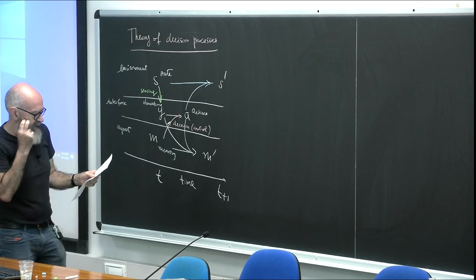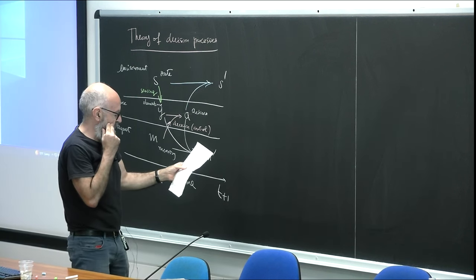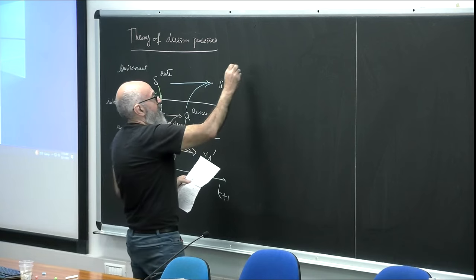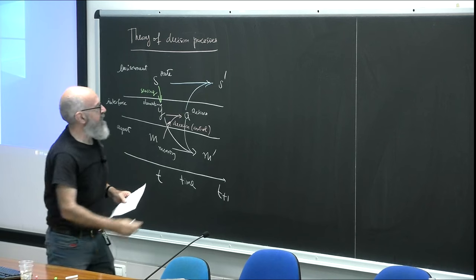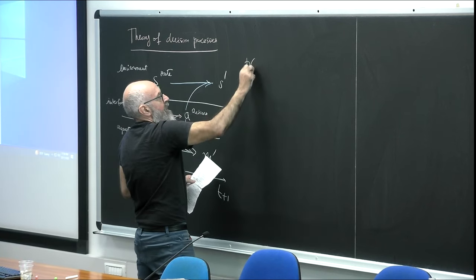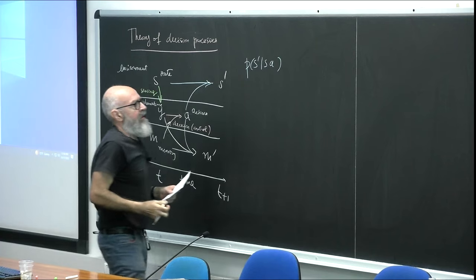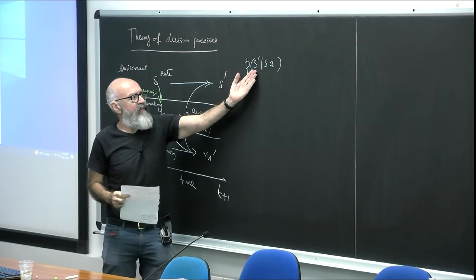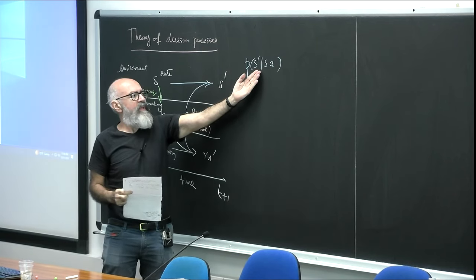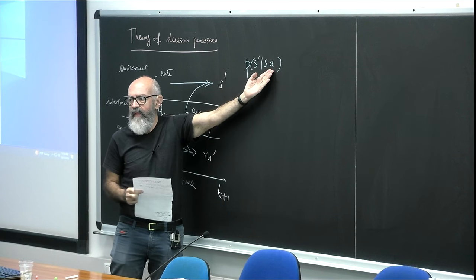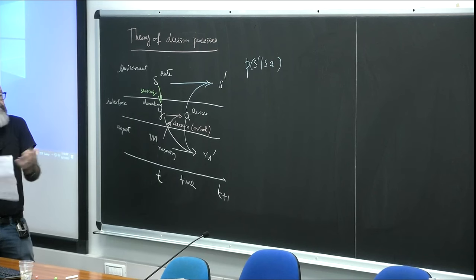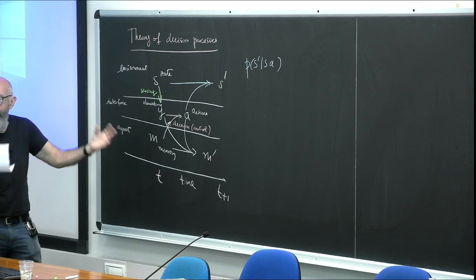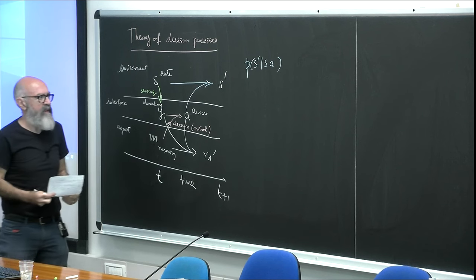Mathematically — and these will really be the last few equations — there are objects describing these arrows. One is a transition probability from the previous state to the new state given the action. The entire framework is cast naturally in terms of stochastic processes, so noise is already encompassed in the formulation.